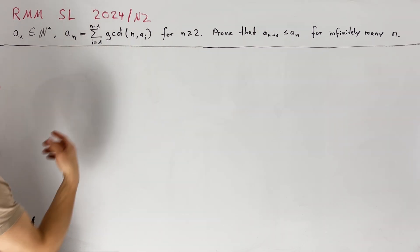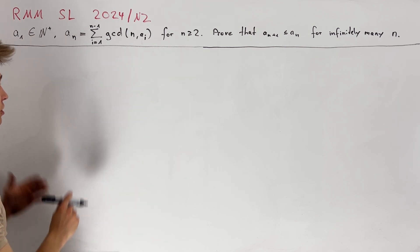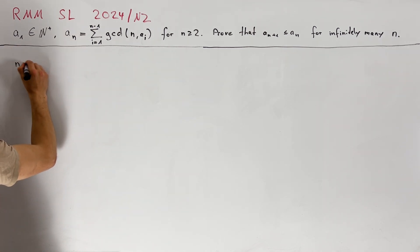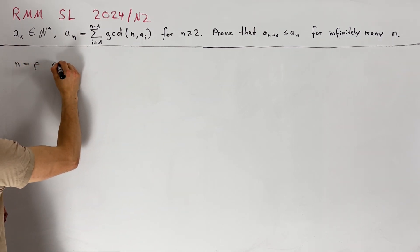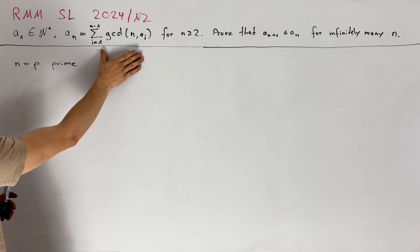For achieving this it would be convenient if n has a small number of prime divisors. So especially if we take n equals to p a prime number we have good chances for this right hand side to be small.